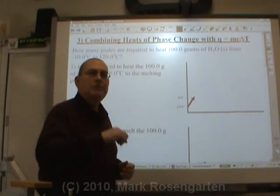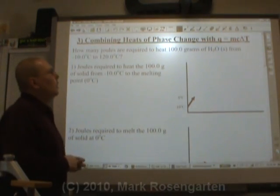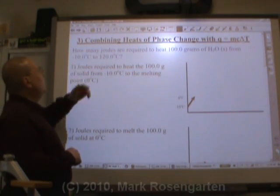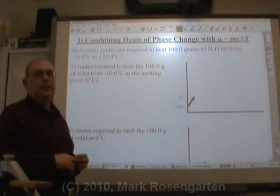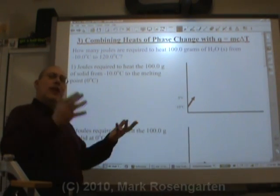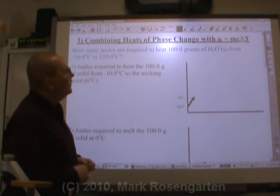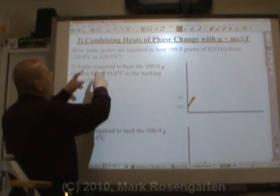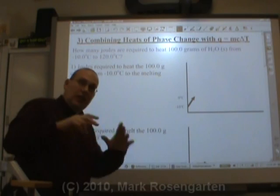What do you do then? You combine them. Here's what I'm talking about. How many joules are required to heat 100 grams of water, solid, from negative 10 degrees Celsius to 120 degrees Celsius? You might want to say, well, that's easy. Q equals MC delta T, so I take 100 times 4.18 times 130 degrees, but you can't do that.